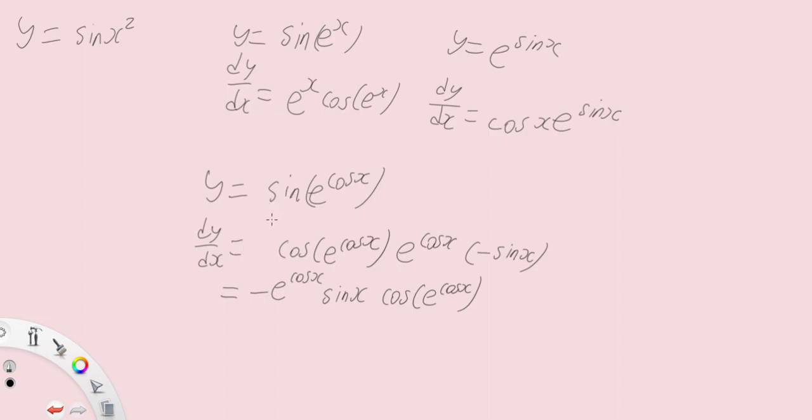So I repeat the step again. Sin(e^(cos x)). First, I change sine to cosine because I differentiate sine first. Now I differentiate inside. I differentiate e^(cos x) to give e^(cos x) times -sin x. And this will be my final answer.